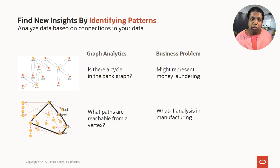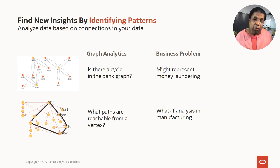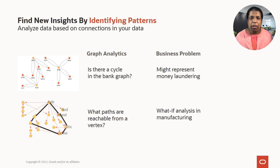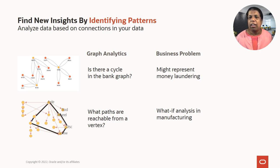You could also use graph queries to do path analysis. For example, when doing what-if analysis in manufacturing, you can model different components — your bill of materials — as a graph. When you're changing the design of one component, you can do path analysis to see other components that are both directly and indirectly connected to that component. These are simple queries that you can specify in a graph query.